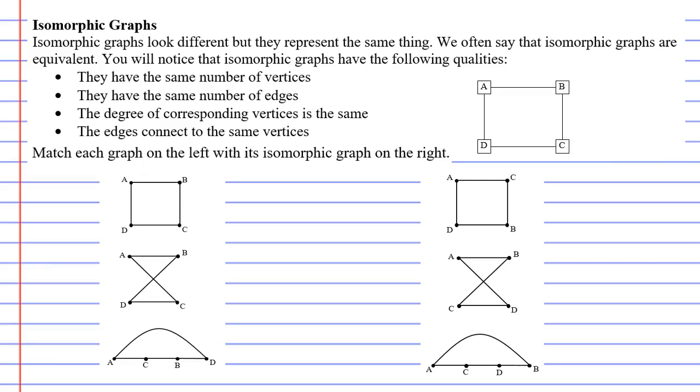Now, looking below, you'll notice that we have some graphs on the left and some graphs on the right. What we're asked to do is to connect each graph on the left with its isomorphic graph on the right.